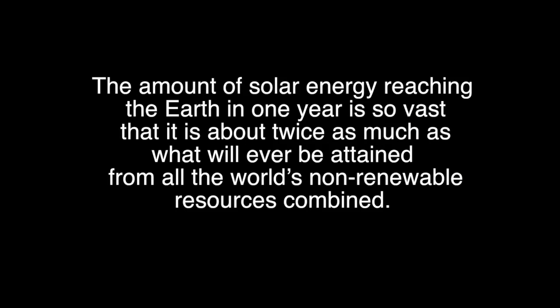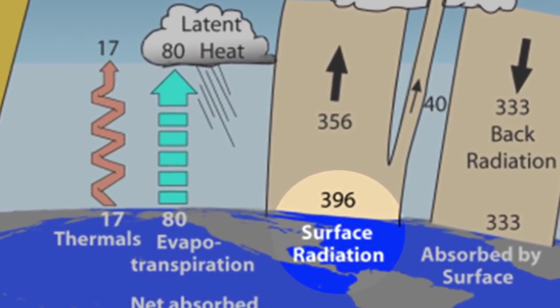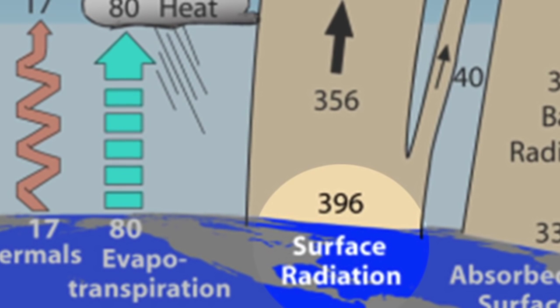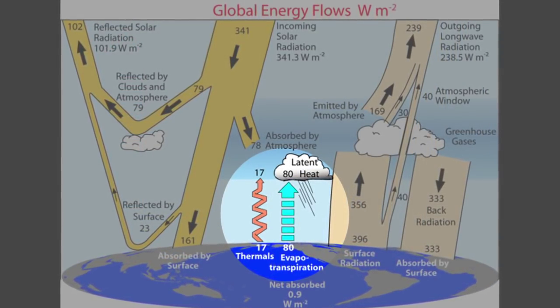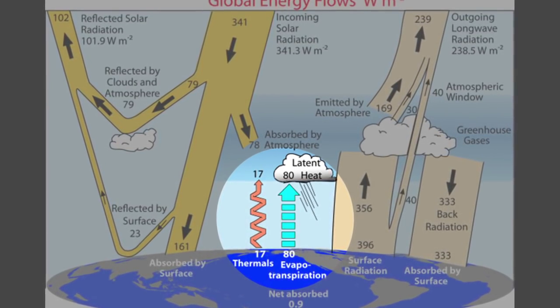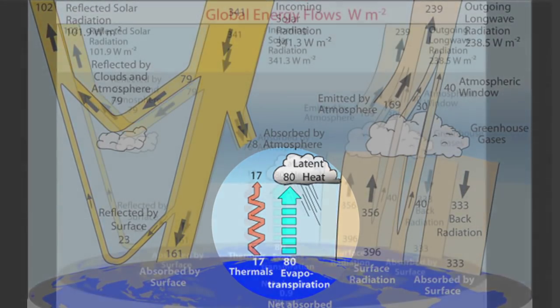To ensure Earth doesn't overheat by constantly absorbing more and more energy, the Earth emits infrared long-wave radiation, heat, back to the atmosphere. It also emits energy through thermals and evapotranspiration, where energy evaporates water on Earth's surface, and then releases that energy to the atmosphere during condensation.